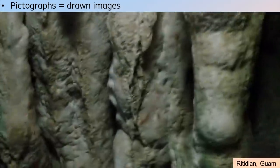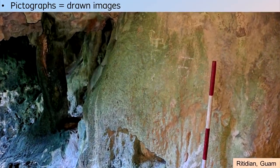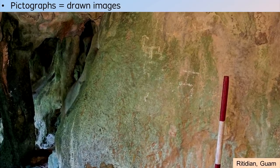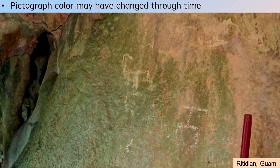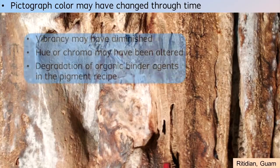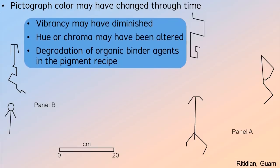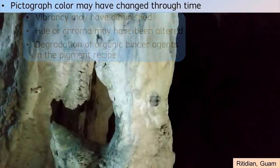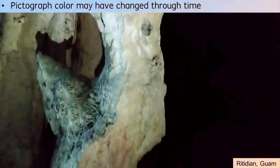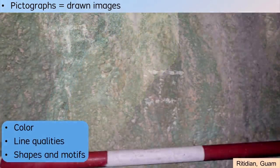In all cases, however, some kind of binding agent likely was involved for ensuring that the pigment could adhere to the natural rock surface. At most sites, the color of a pictograph likely has changed through time. For example, the vibrancy may have diminished or faded. In principle, the hue or chroma may have been altered, especially if organic binders have deteriorated through time. Next, pictographs can be described in their line width, thickness, and shapes.